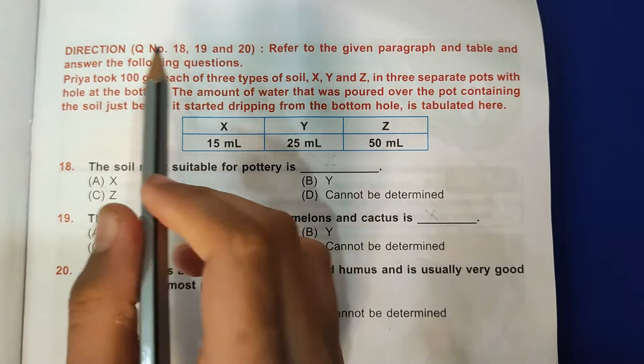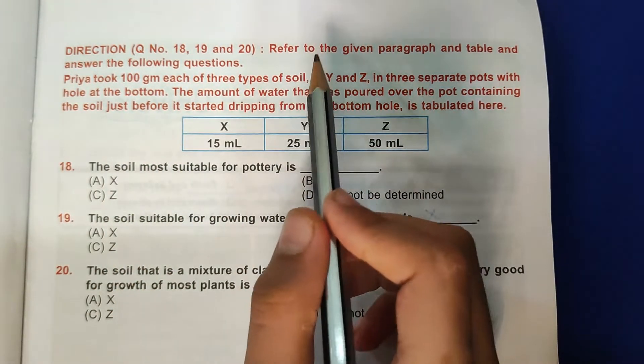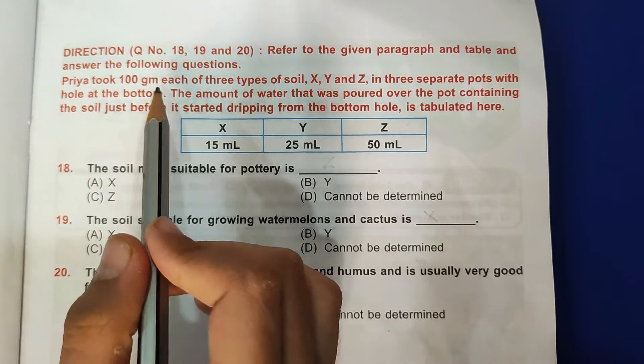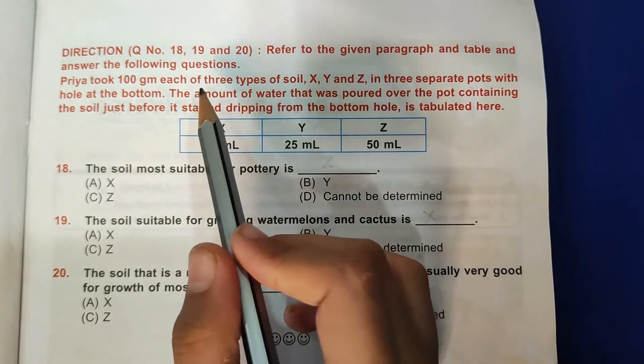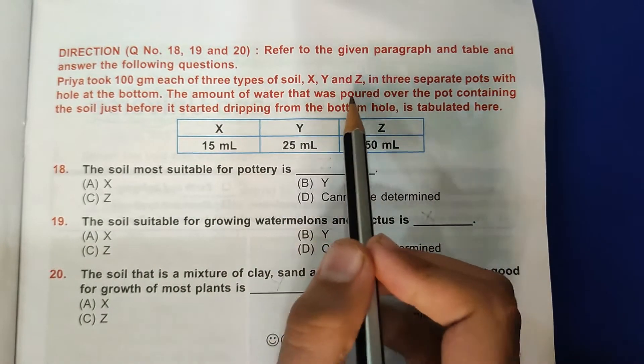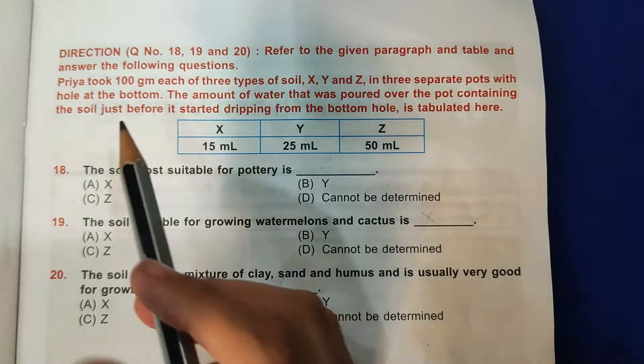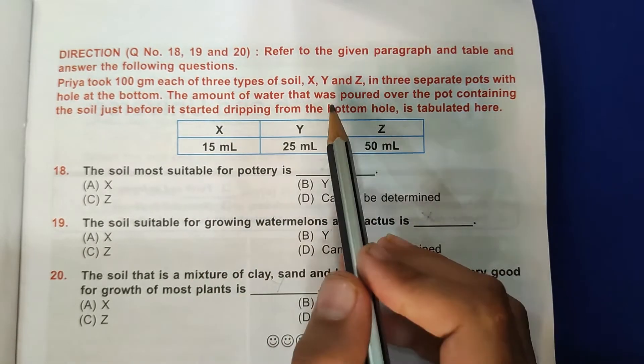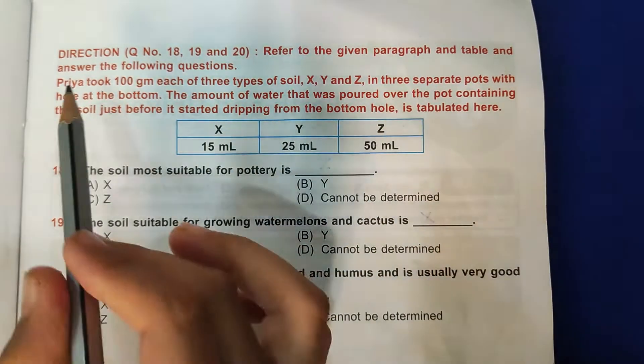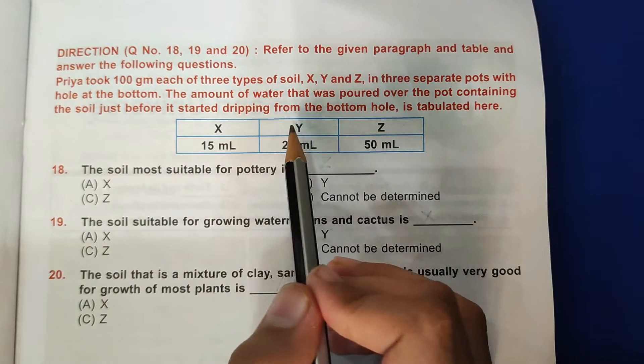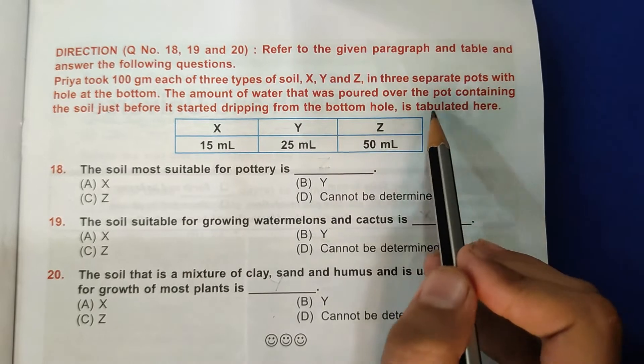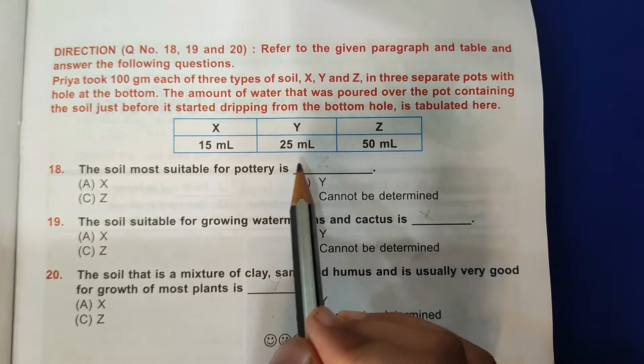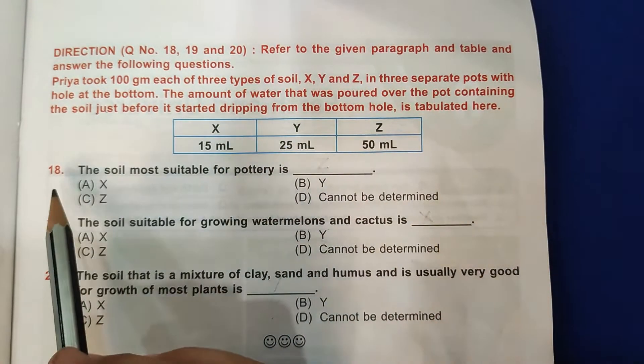Direction: Question numbers 18, 19, and 20 refer to the given paragraph and table and answer the following questions. Priya took 100 grams each of three types of soil X, Y, and Z in three separate pots with a hole at the bottom. The amount of water that was poured over the pot containing the soil just before it started dripping from the bottom hole is tabulated here: X is 15 ml, Y is 25 ml, and Z is 50 ml.